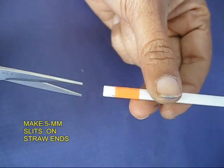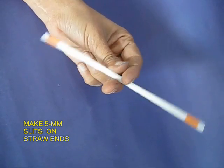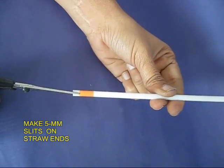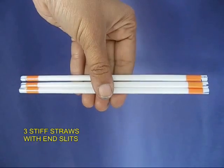Take three stiff straws and attach tape on both ends, then make 5mm slits on both ends. The length between the cuts will be 16 cm in all three white straws.